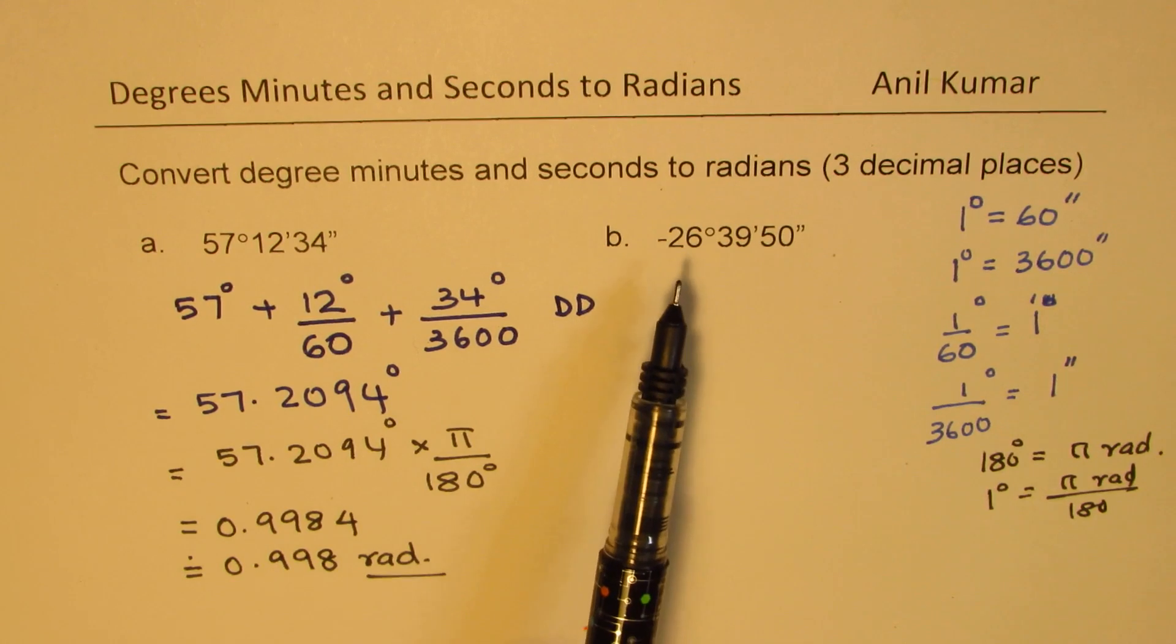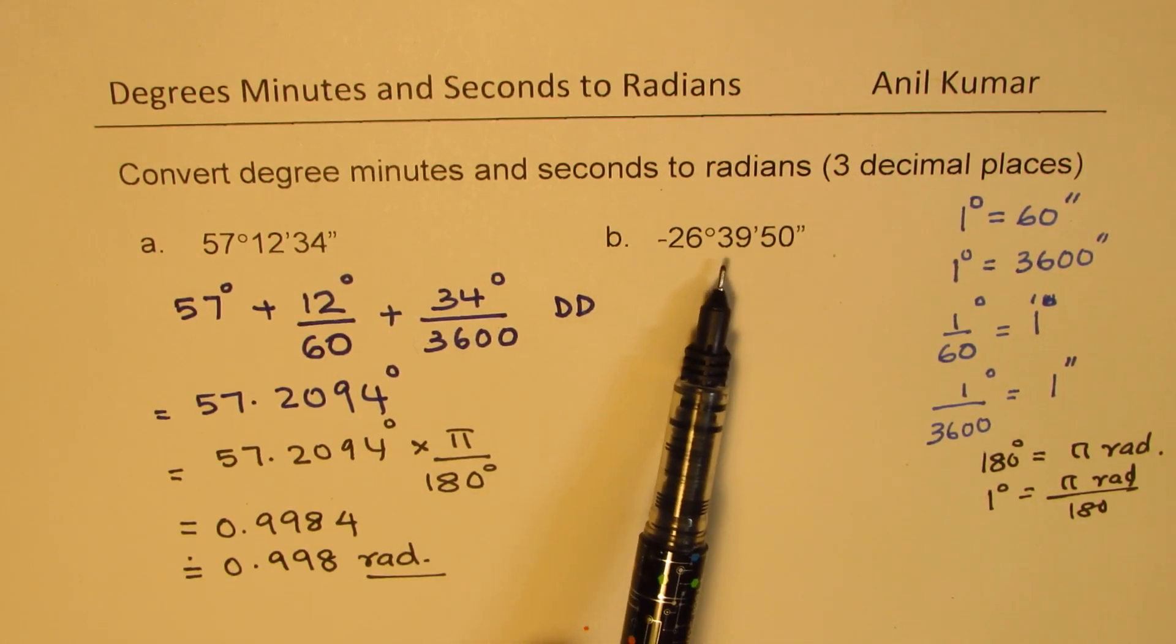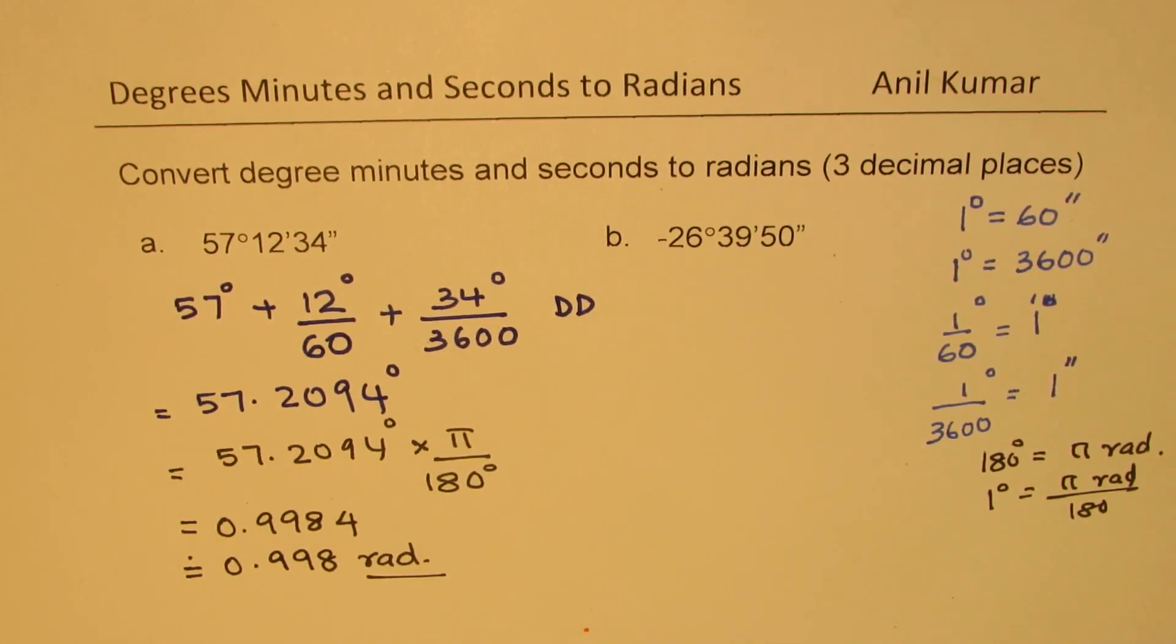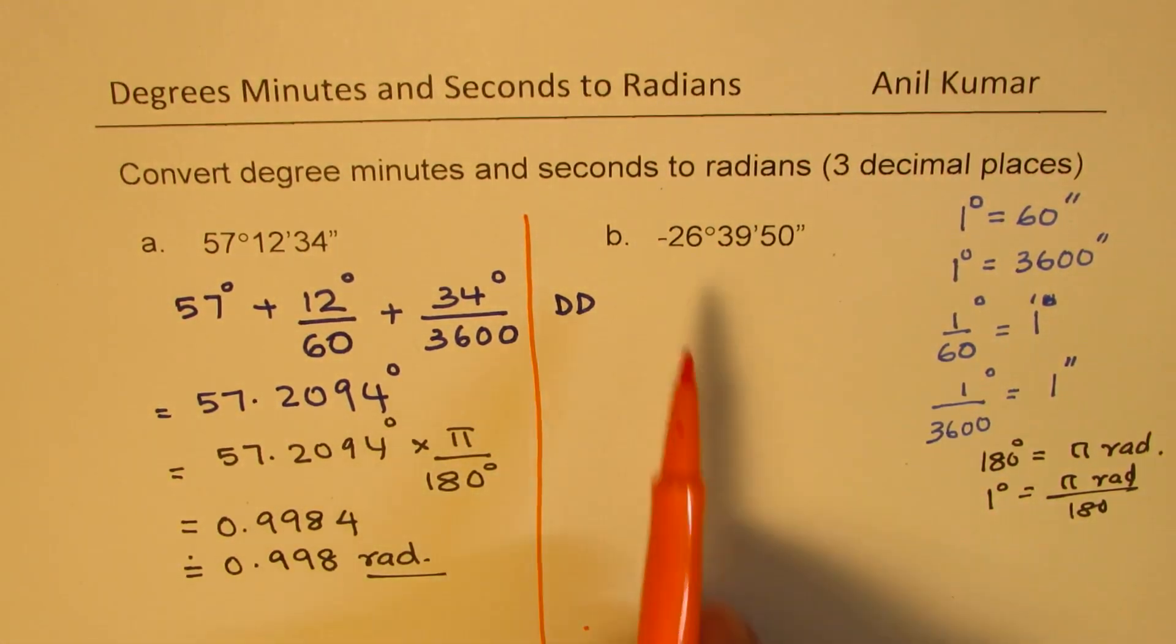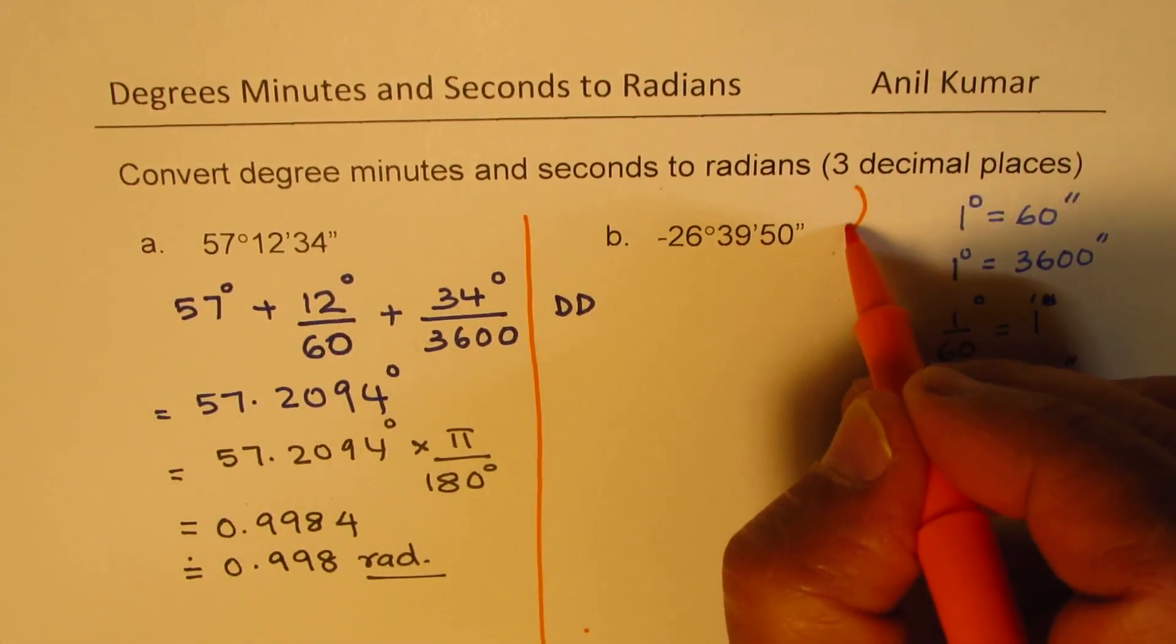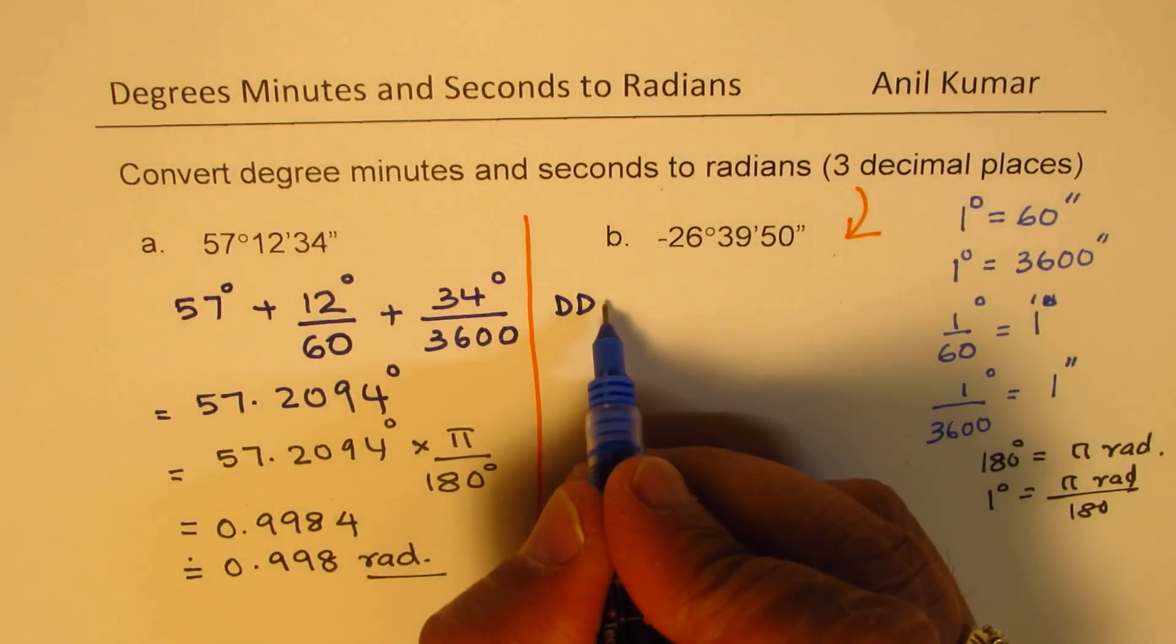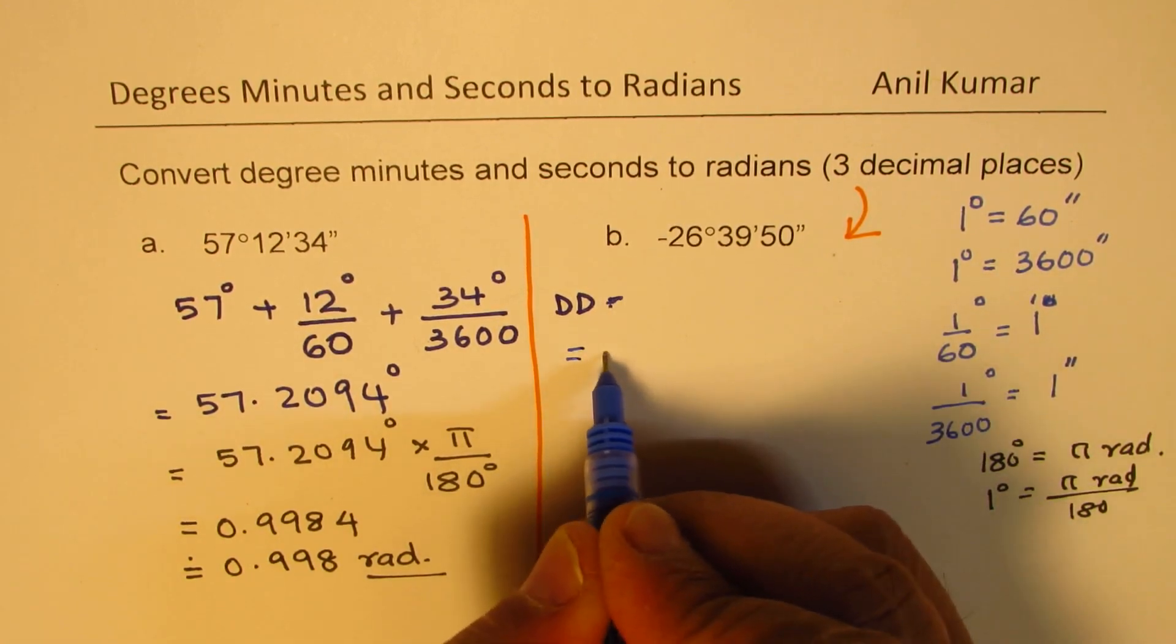Now, I would like you to do the conversion of minus 26 degrees, 39 minutes and 50 seconds into radians. You can pause the video, do it, and then check with my solution. Negative means that the measurement of the angle has taken place in the clockwise direction. Negative will remain negative. That is important to understand.